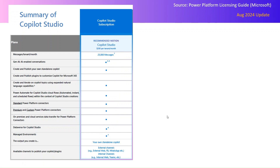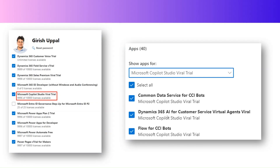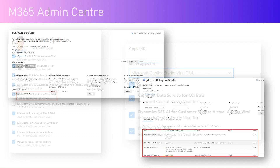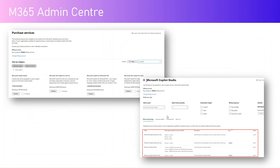In my tenant I have a Microsoft Copilot Studio viral trial. You get a trial version as well — so if you want to try something out within your organization before embracing Copilot Studio, you can go with this trial license. With this trial license you get access to Common Data Service, Dynamics 365 AI for Customer Service, and Flow for CCI bots, so you can try out various combinations of technologies and build your copilot.